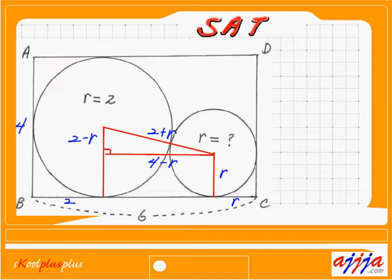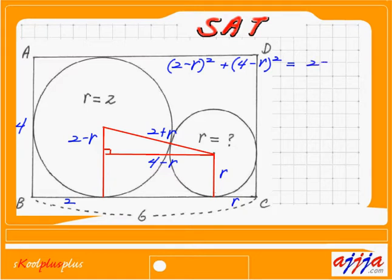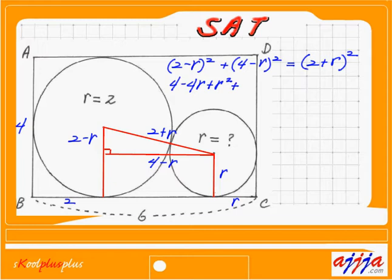I can use the Pythagorean theorem. This side is 2 minus R, and this side is 4 minus R, and the hypotenuse is 2 plus R. Let me start with the shortest one: (2 minus R) squared, plus (4 minus R) squared. Expanding: 2 times 2 is 4, minus 4R, plus R squared. The second term gives 16 minus 8R plus R squared.